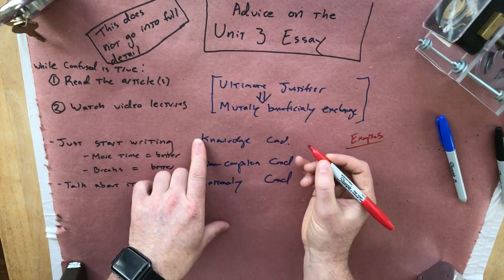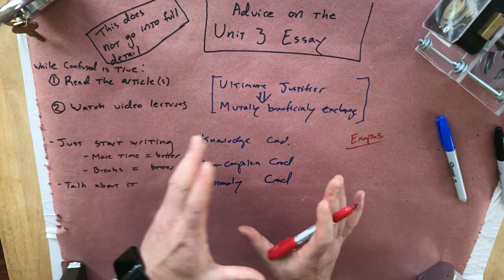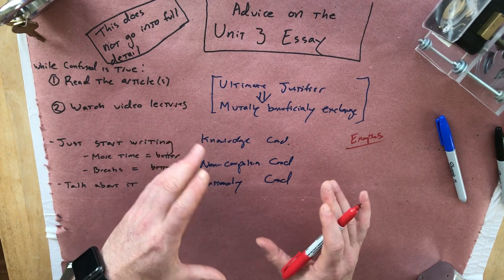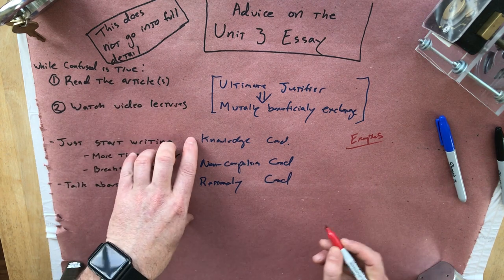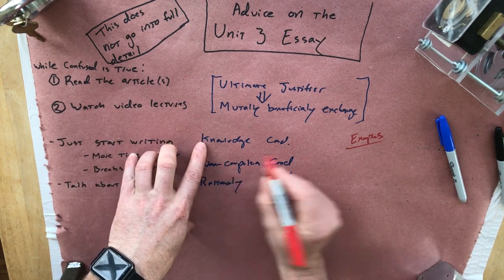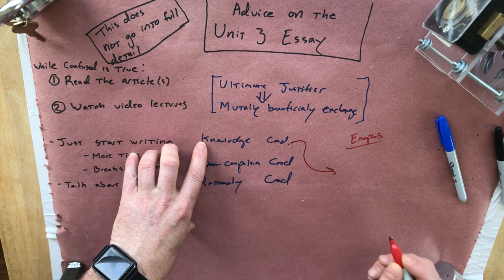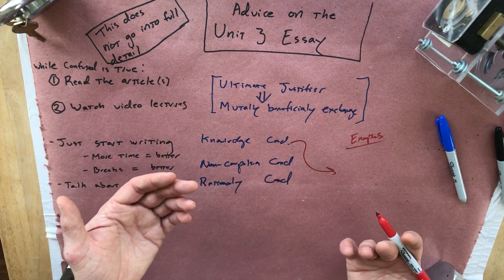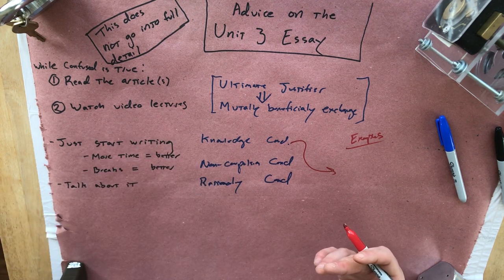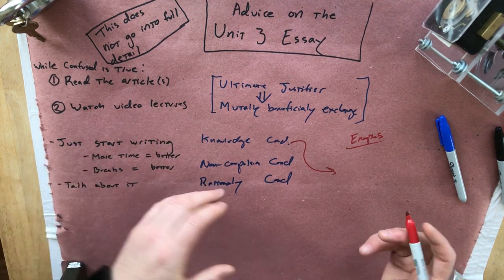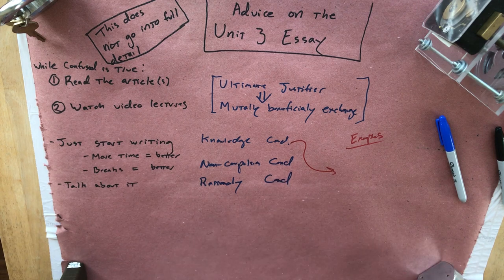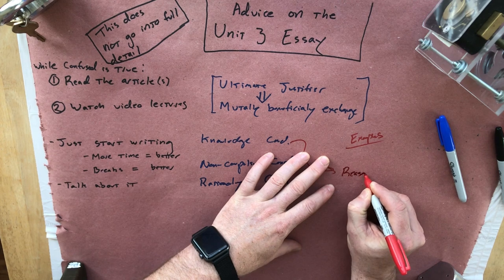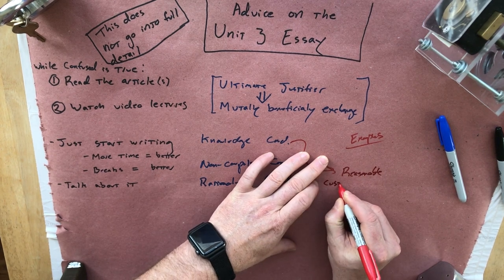Then think about the knowledge condition — each of the conditions — and start thinking about how these things might be flexible. Remember that with the knowledge condition, Holley ends up saying that the information you're supposed to give as a salesperson, your general obligation to the consumer, is to give something like what a reasonable customer would need to know.